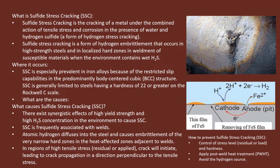Sulfide stress cracking occurs predominantly in body-centered cubic (BCC) structures. It also occurs in steels having a hardness of 22 or greater on the Rockwell C scale. So these two scenarios are key: a hardness at or above that scale, and a body-centered cubic structure.